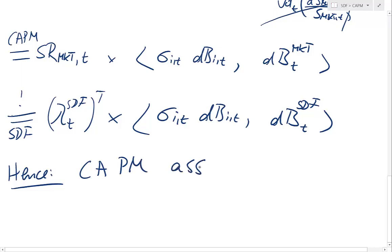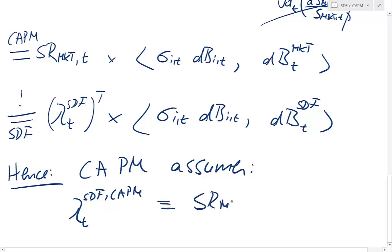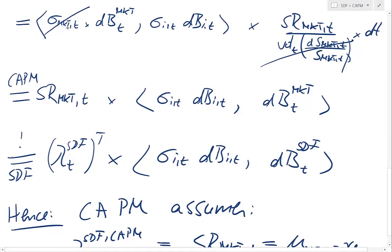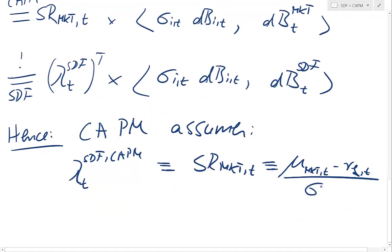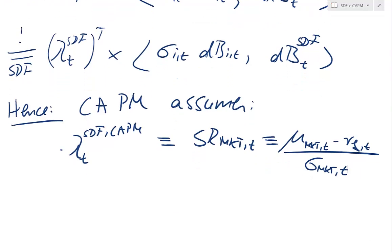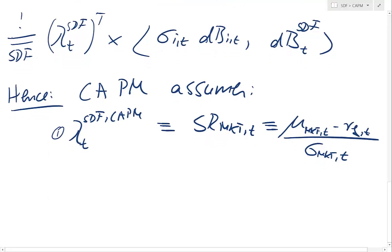The CAPM assumes that lambda_t of the SDF is nothing else than the Sharpe ratio of the market at time t — that is, the expected return of the market portfolio over the next instant minus the risk-free rate, divided by the volatility of the market. This is the first CAPM assumption: the Sharpe ratio of the market portfolio is the risk compensation an investor gets per unit of market risk.